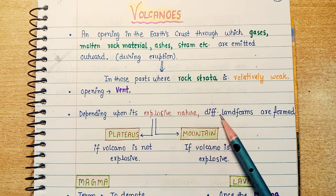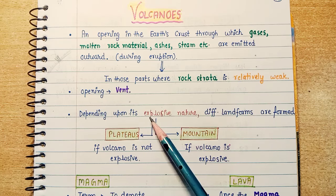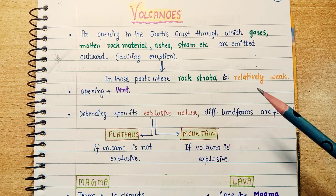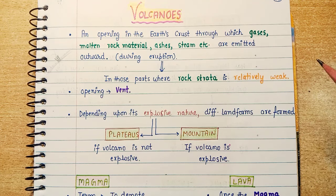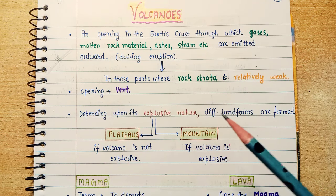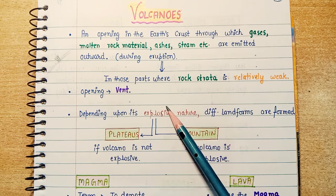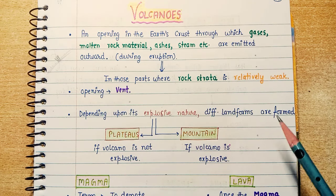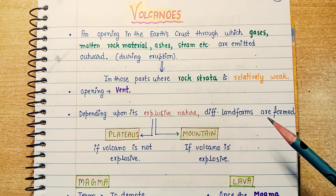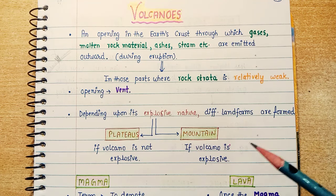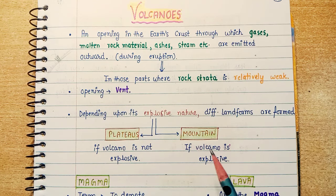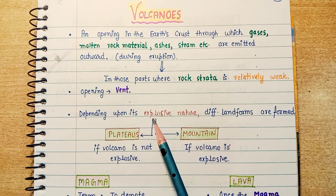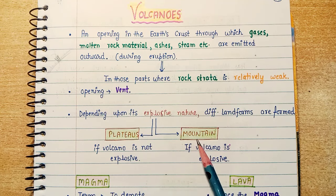Depending upon its explosive nature, different landforms are formed. The volcanic eruption can be very large or small. What are landforms? There is a plain area, a small sea, mountain ranges — these are all different structures called landforms. Depending on how big the eruption is, two types of landforms form: plateaus and mountains.